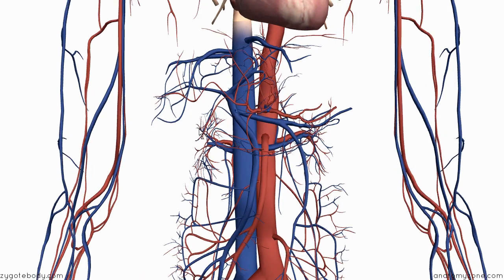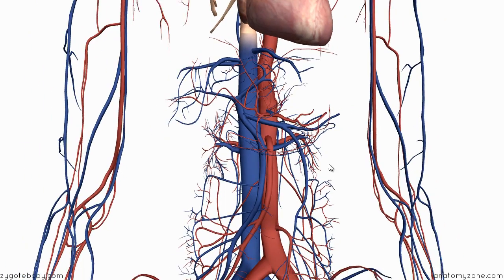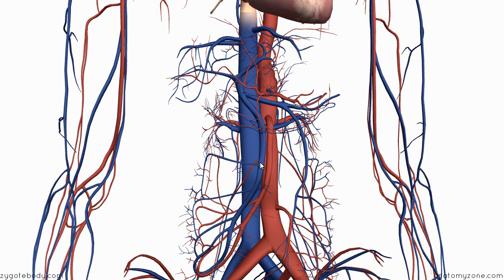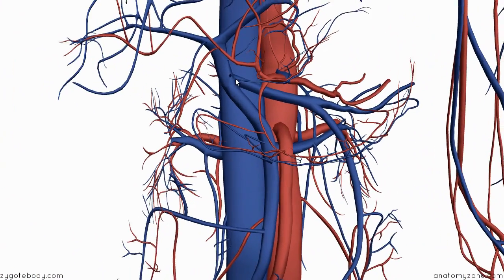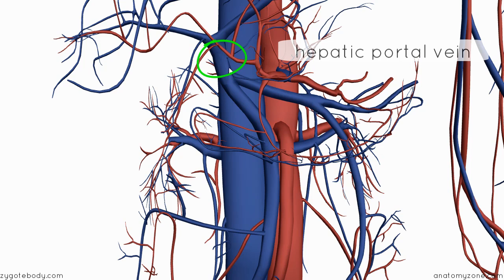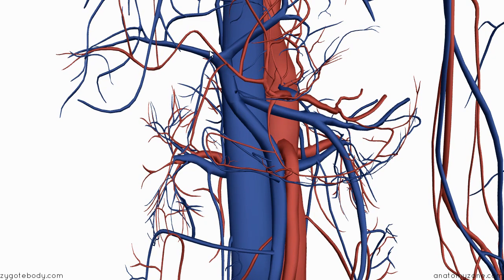I'll show you the hepatic portal vein, which is the final common pathway for the blood of the gut. You can see all the veins in blue here which are draining the gut, and they drain into this one portal vein. So you can see this common pathway for this blood — this is the portal vein. The portal vein splits into two branches; it's got a right and a left branch which passes into the substance of the liver.